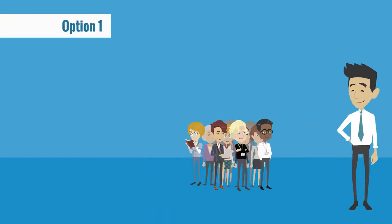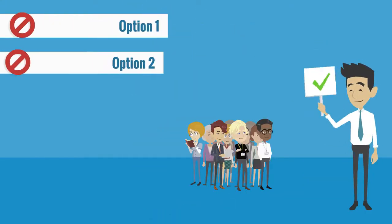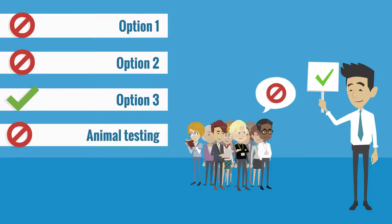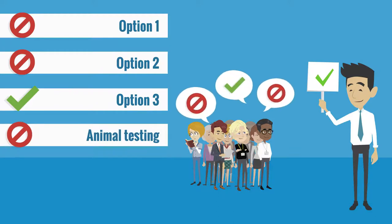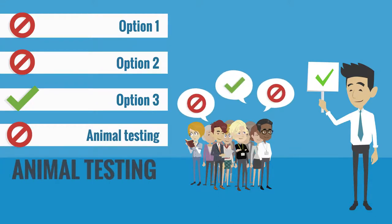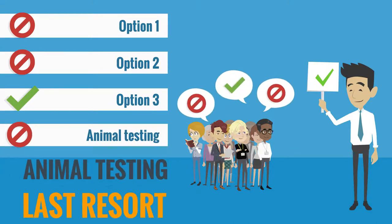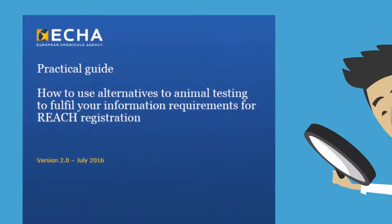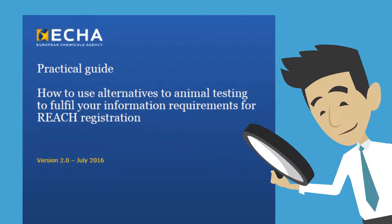Then, you need to decide together which testing you may have to do, considering all the possible alternatives before testing on animals. You should also consult ECHA's guide on how to use alternatives to animal testing.